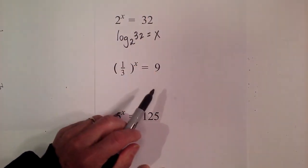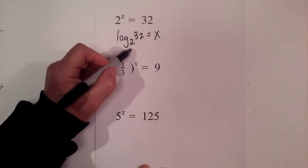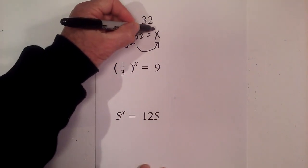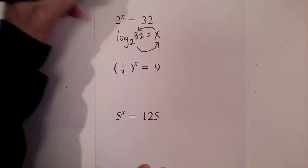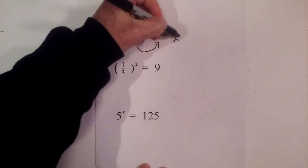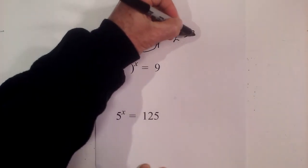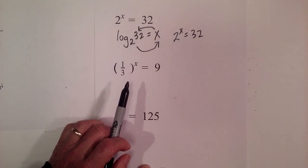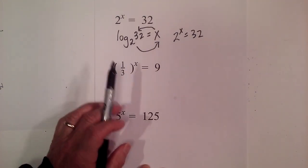Now I can check the work: 2 to the x equals 32. So if I rewrite this, 2^x = 32, we get back to our original equation in exponential form.